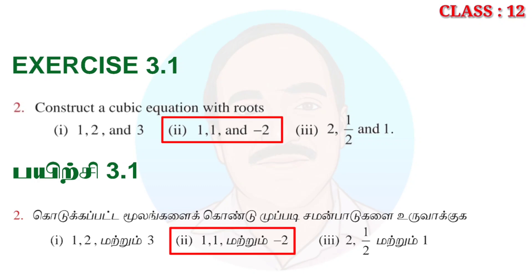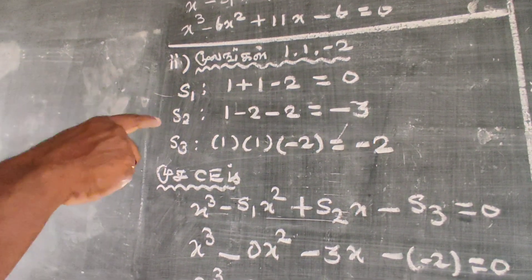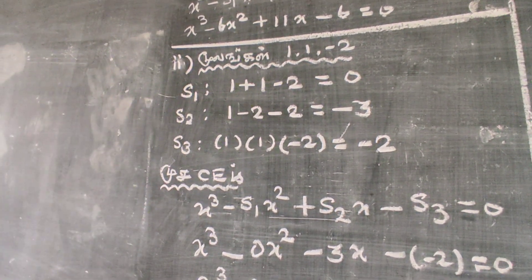The second substitution: the roots are 1, 1, minus 2. Now we need to find S1, S2, and S3.